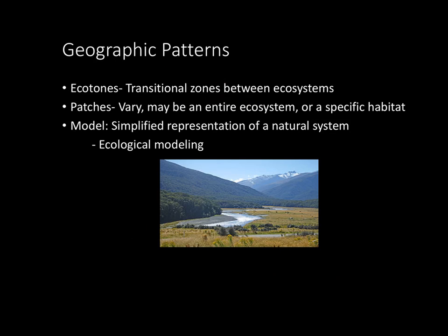Let's look at geographic patterns. An ecotone is a transitional zone between two ecosystems. If you look at the river here, the river is an ecosystem within itself, this grassland area is a different ecosystem, and this forest area over here is a different ecosystem — so in between all of those are what are known as ecotones. Landscape ecology is basically the study of how landscapes affect productivity of ecosystems.